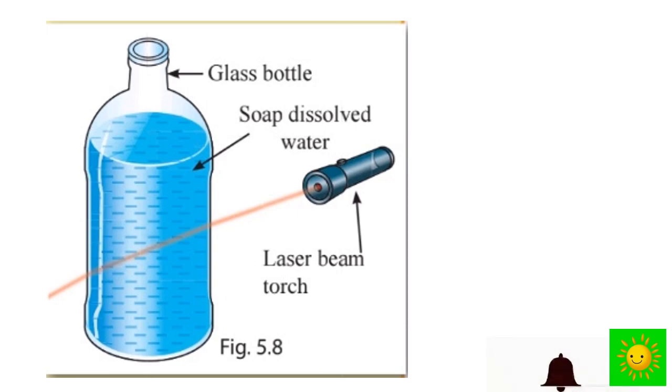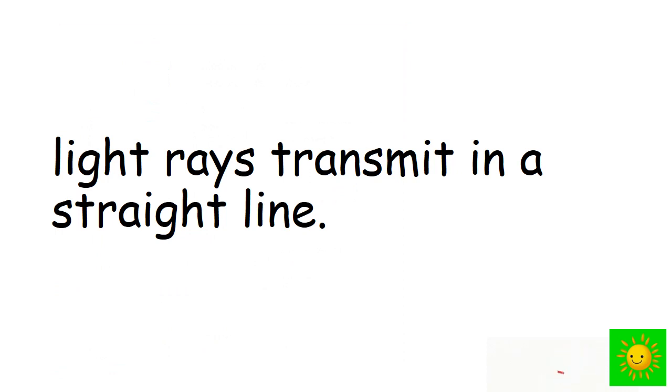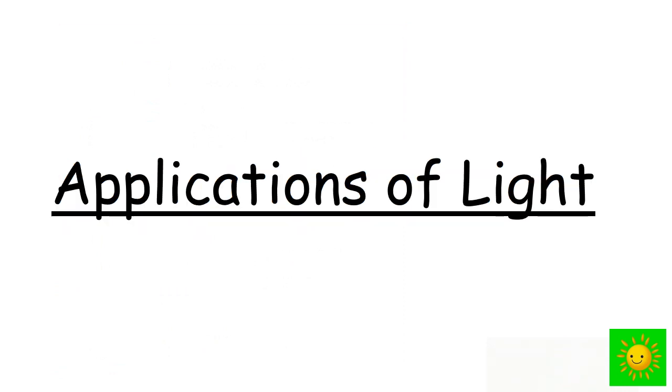Then keep the torch near the bottle and light it, directing it towards the bottle. Now change the direction of the torch and observe the changes. You can see the path of the light ray through the bottle of water. In these activities you can understand that light rays transmit in straight lines.